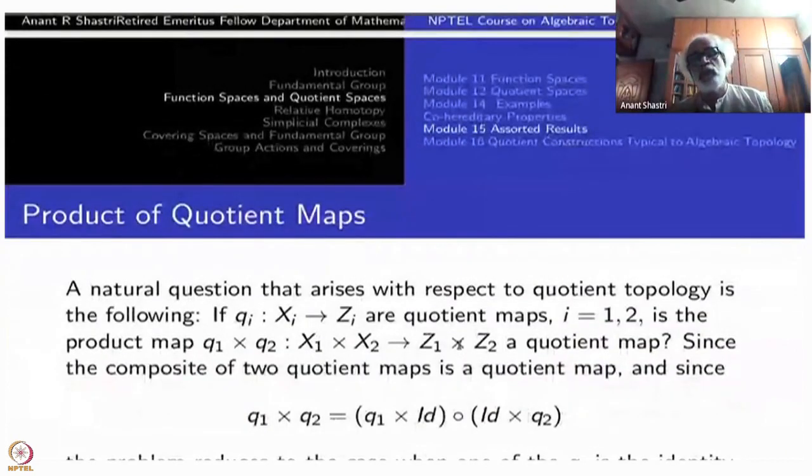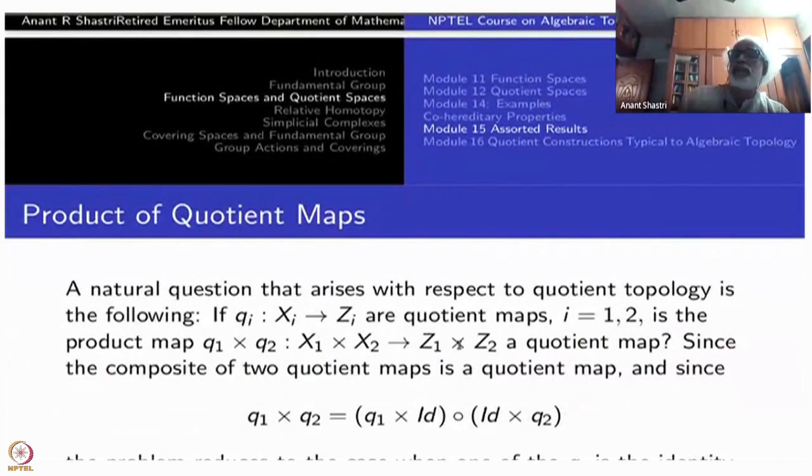Now let us come to another important question, namely, if you take two quotient maps, will the product be a quotient map?